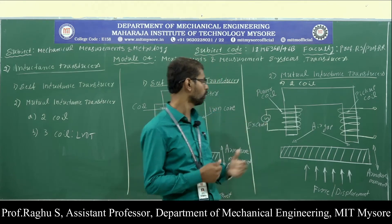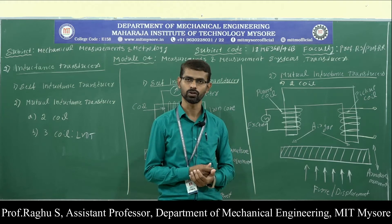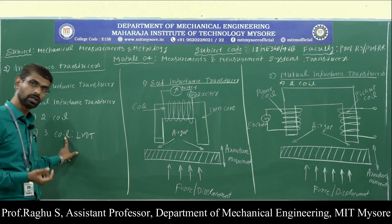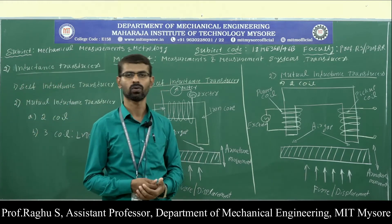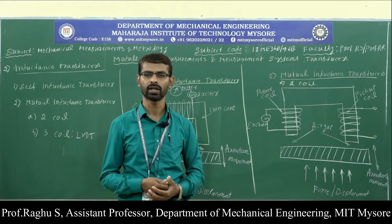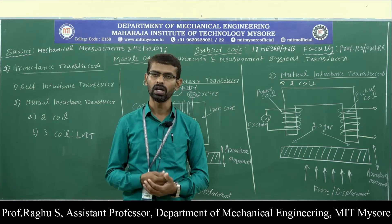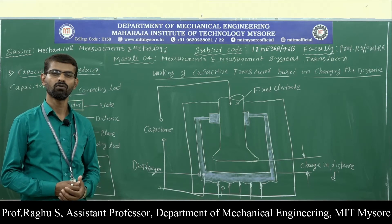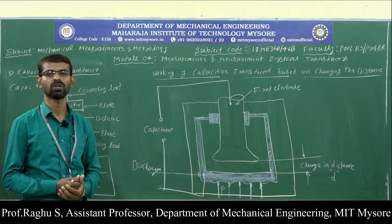A three-coil example is the LVDT — Linear Variable Differential Transformer. The working and construction of LVDT was already discussed in module two; refer to the videos related to module two. Next, we will discuss the working of the capacitive transducer.